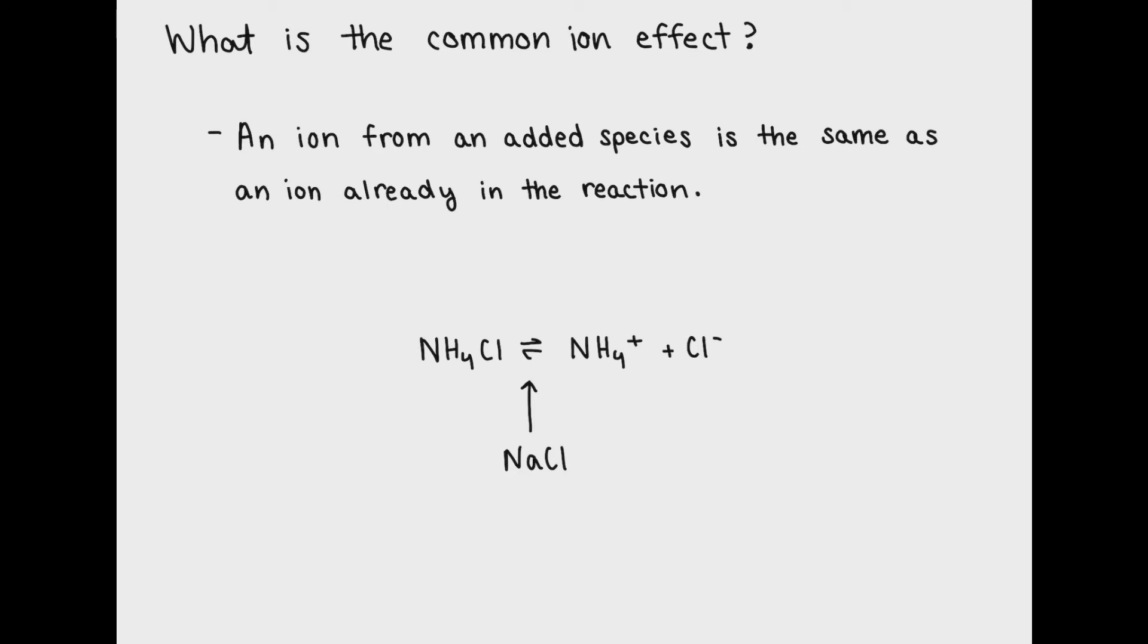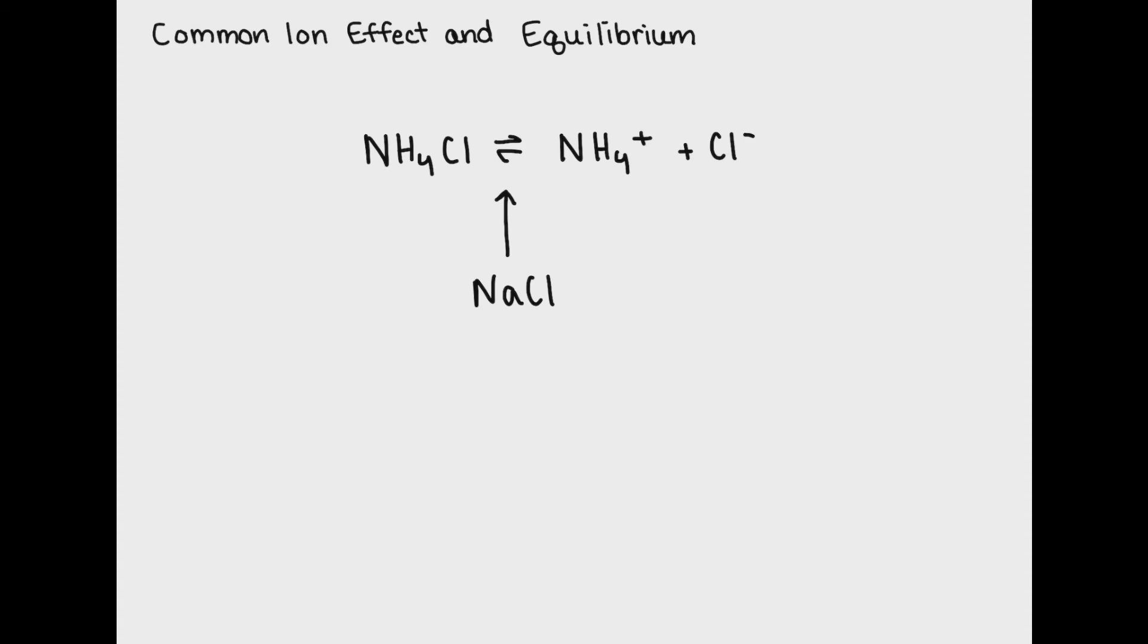In the reaction below, I show the dissociation of NH4Cl into NH4 plus and Cl minus. If I then add in NaCl or table salt, I've then added in an extra source of Cl minus ions. The new source of Cl minus ions will be additive to the old source of Cl minus ions, meaning we'll have increased the concentration of Cl minus ions in solution.